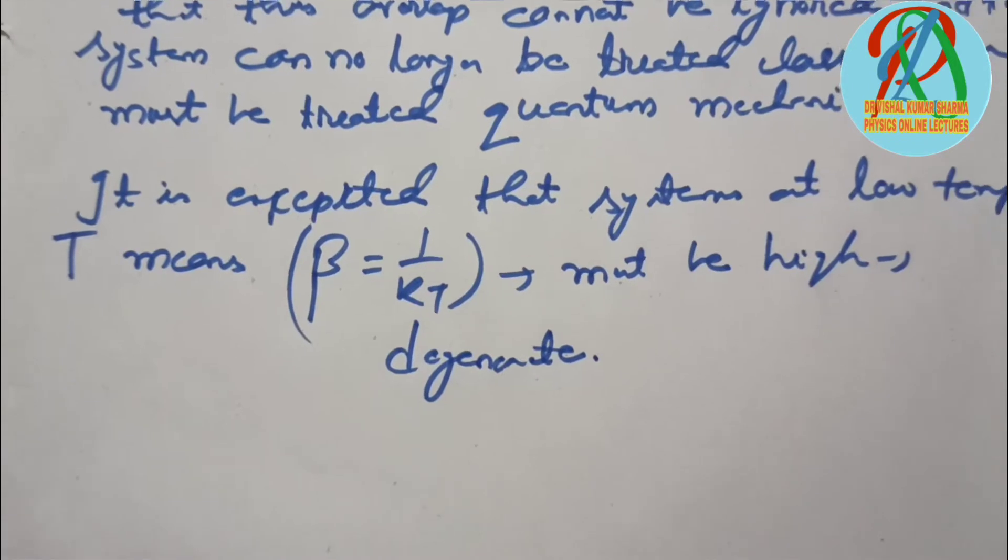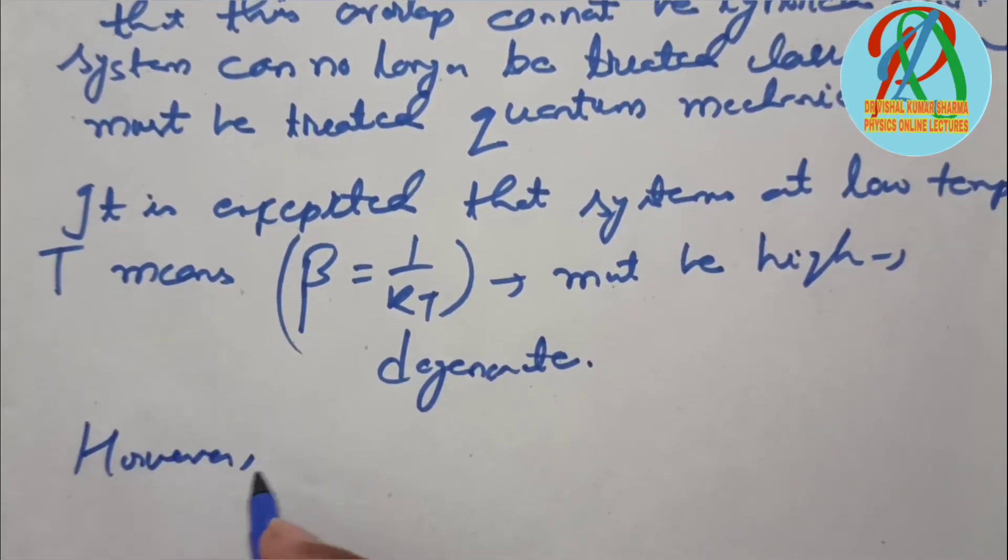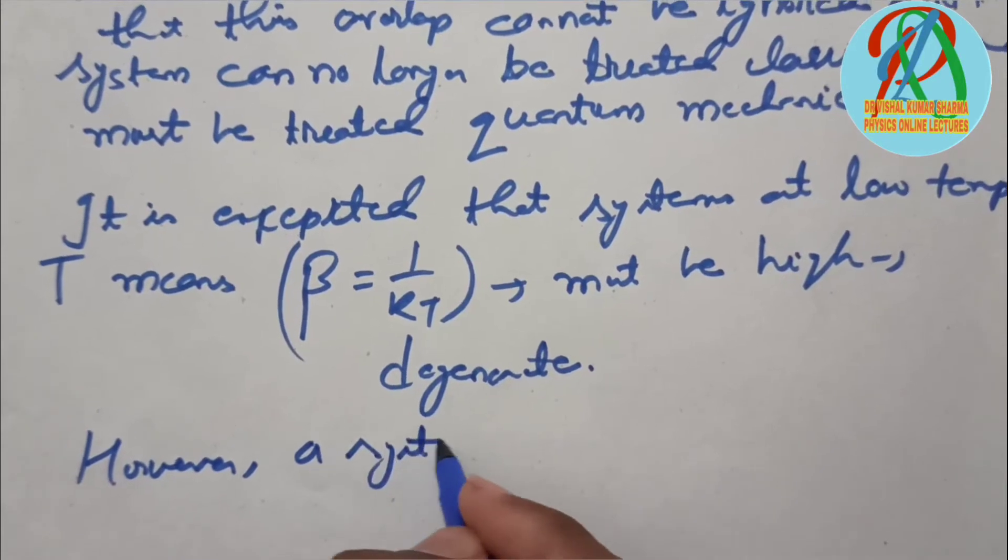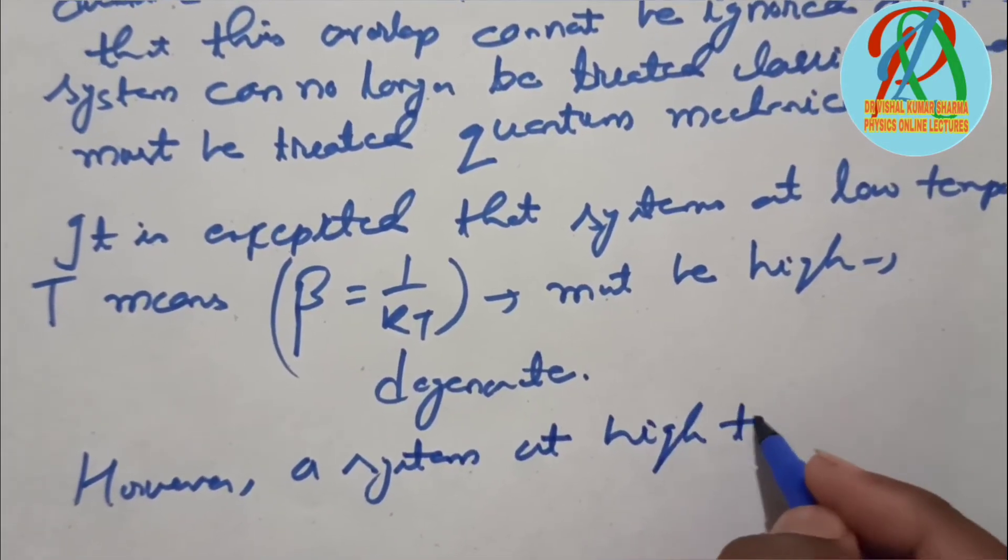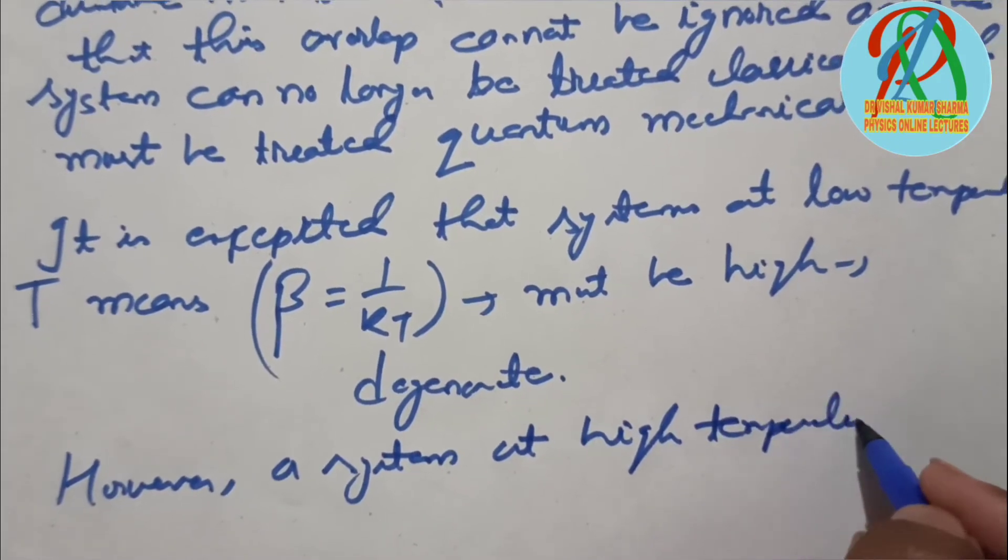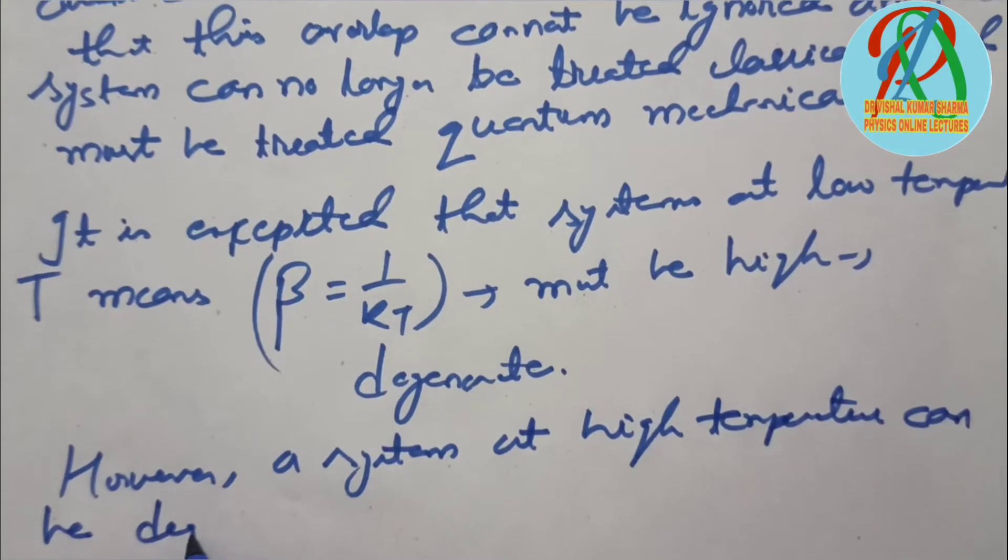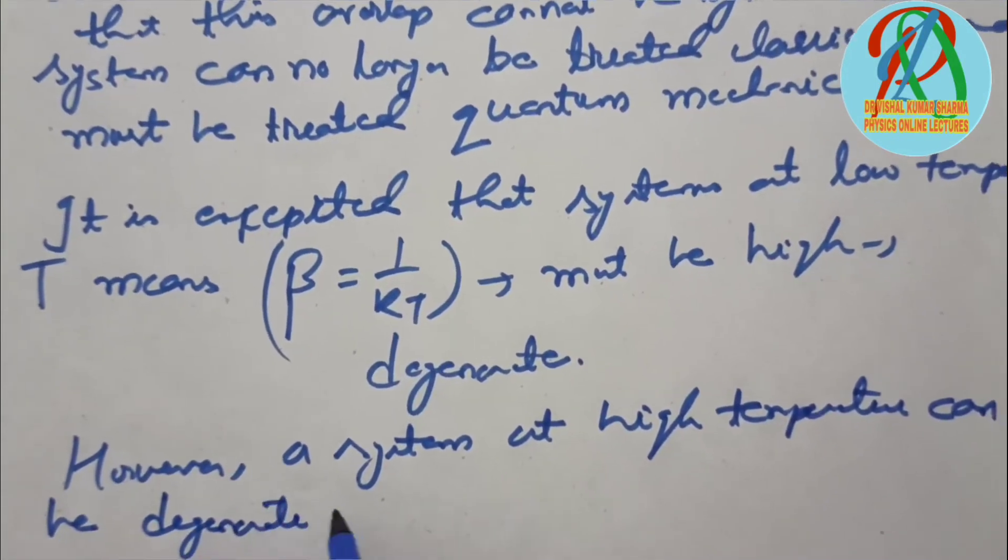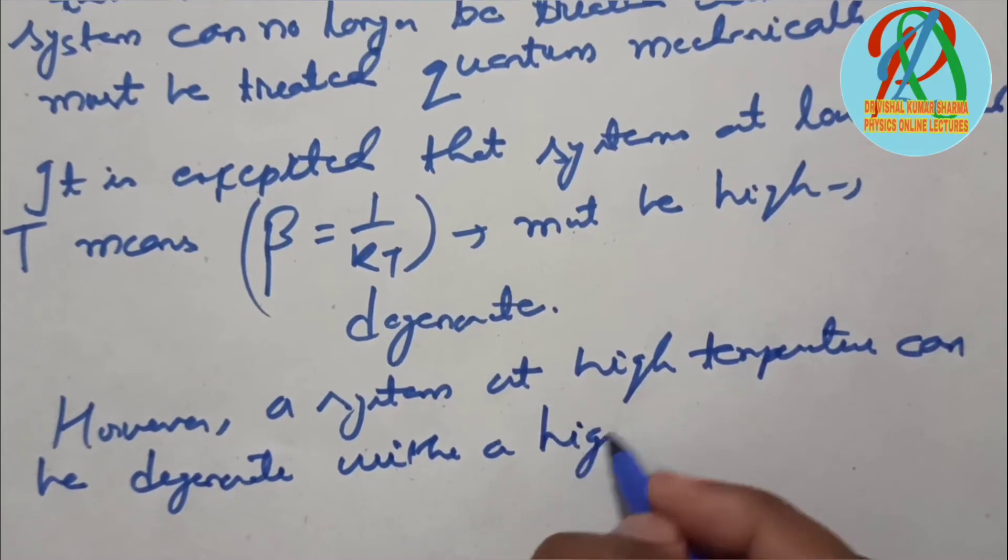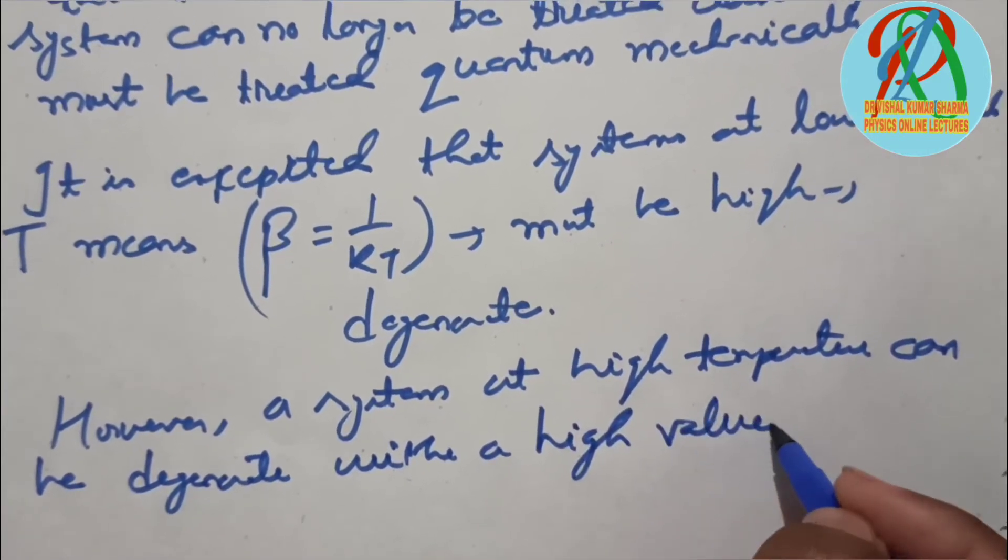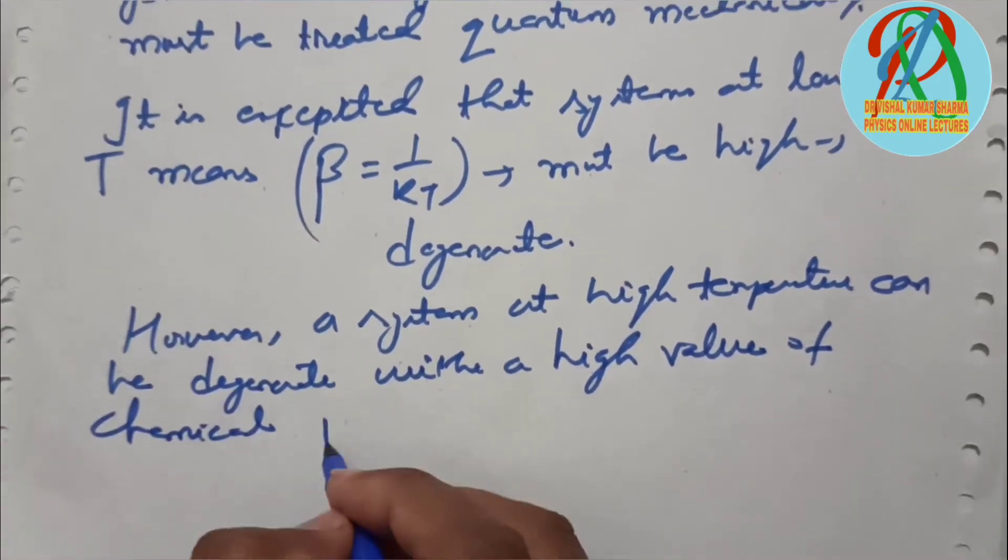However, a system at high temperature can be degenerate with a high value of chemical potential μ.